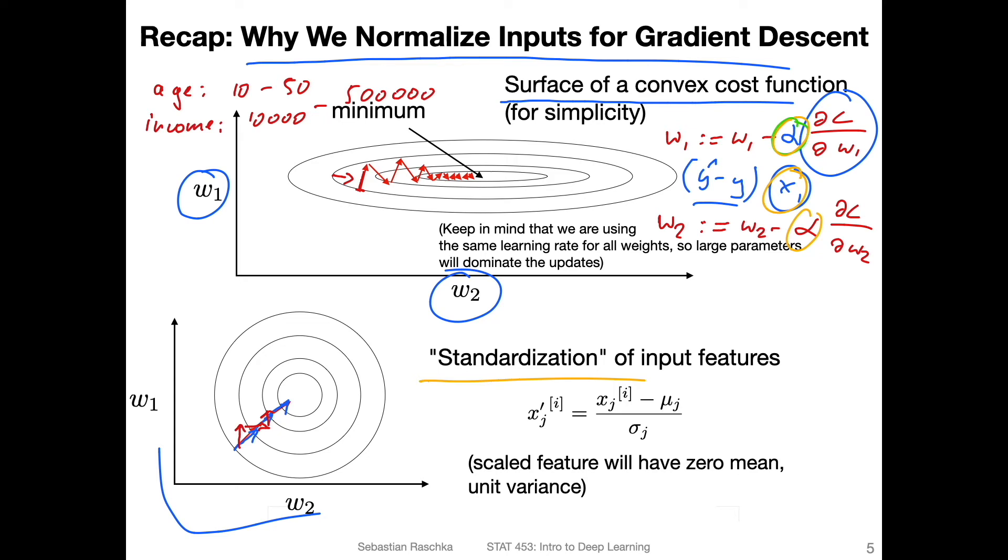I mean, the data after applying this won't be normal if it wasn't normal before, but it has the properties of a standard normal distribution, which is zero mean and unit variance. So unit variance is a fancy word for saying that the standard deviation is one or the variance is one.